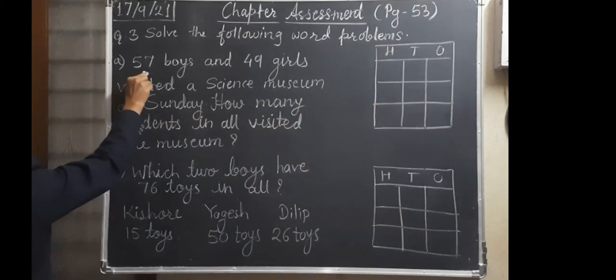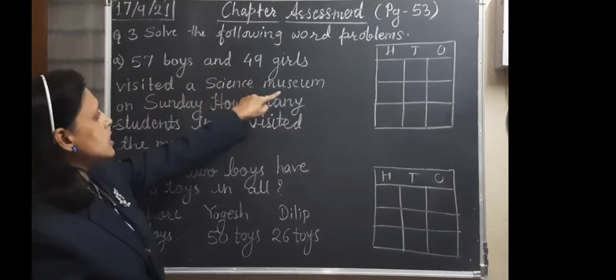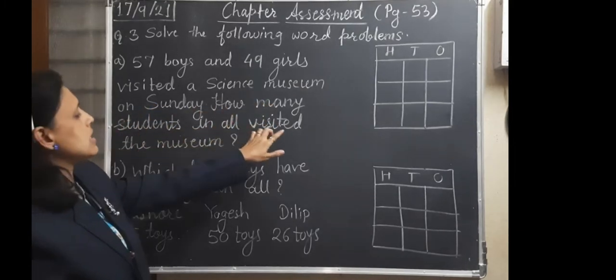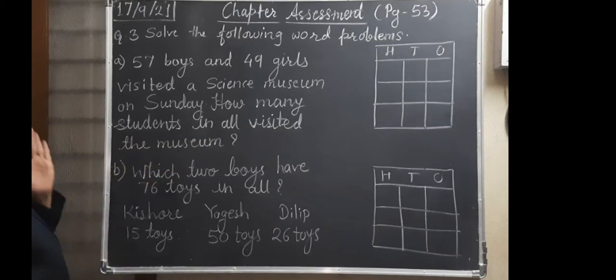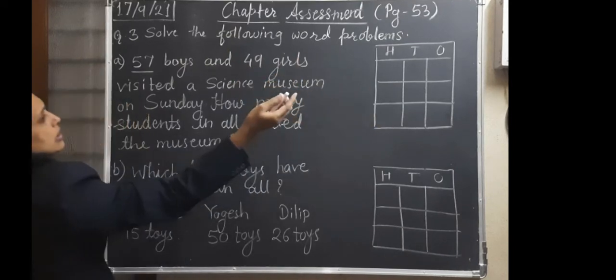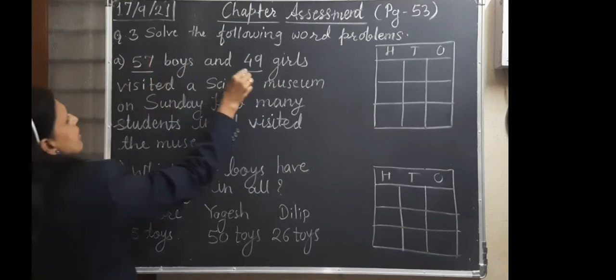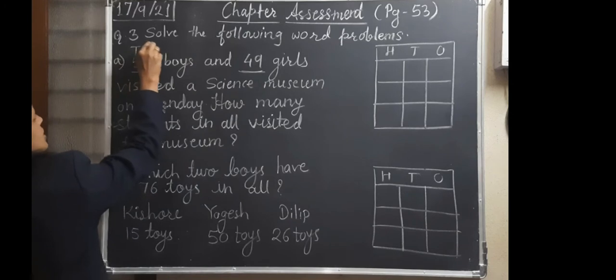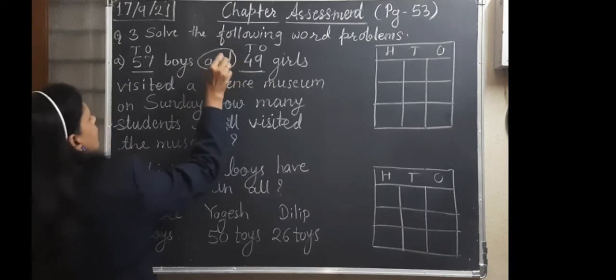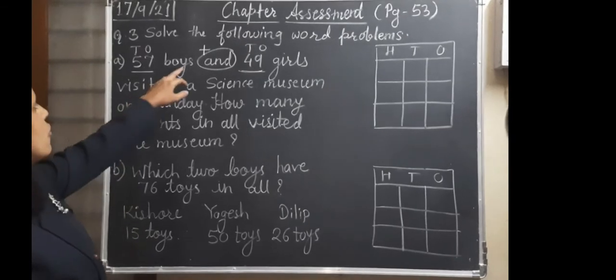From that, A: 57 boys and 49 girls visited a science museum on Sunday. How many students in all visited the museum? So what we will do? We have to find out the numbers first, which we are using for doing the work. So here, two numbers are there, 57 and 49. Between these two numbers, there is 'and' word. So whenever like this, it is there, we are going to do addition.